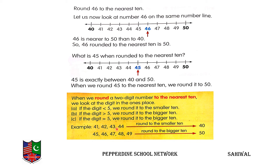Examples: 41, 42, 43, 44 all have ones digits less than 5, so they round to the smaller 10 — which is 40. Then 45, 46, 47, 48, 49 have ones digits equal to or greater than 5: 45 has ones digit equal to 5, and 46, 47, 48, 49 are all greater than 5. So all of these round to the bigger 10 — which is 50.